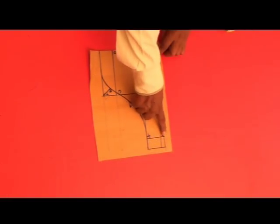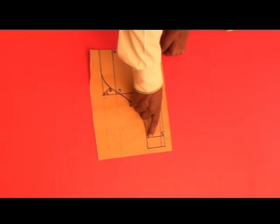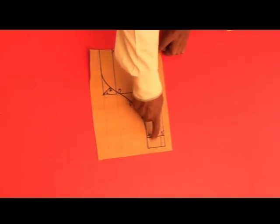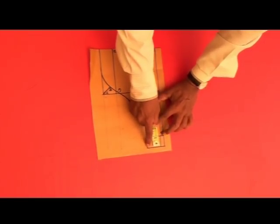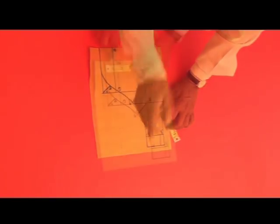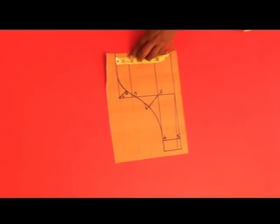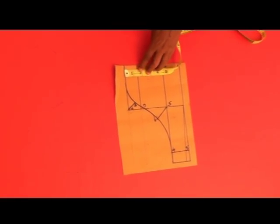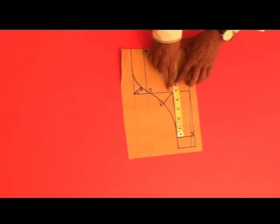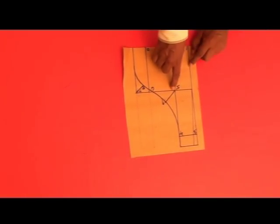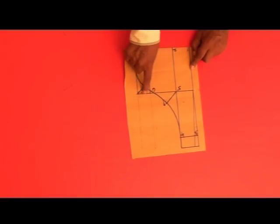Here join the sides and keep 1 inch seam allowance. Here take 1 and a half inch extra. Here take half and draw a straight line.